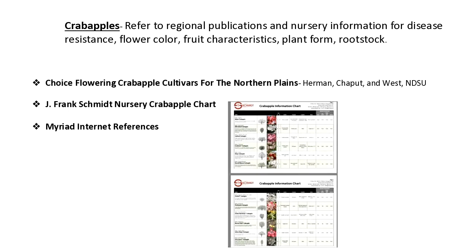As I mentioned, I did want to come back to crab apples for a moment because there are hundreds of cultivars. A lot of work has been done at NDSU over the years. Disease resistance is probably the biggest thing we look for, followed by flower color, flower duration, fruit characteristics, and form. Crab apples now range from wide spreading to very narrow upright forms to fit into different landscapes, along with different rootstock options.